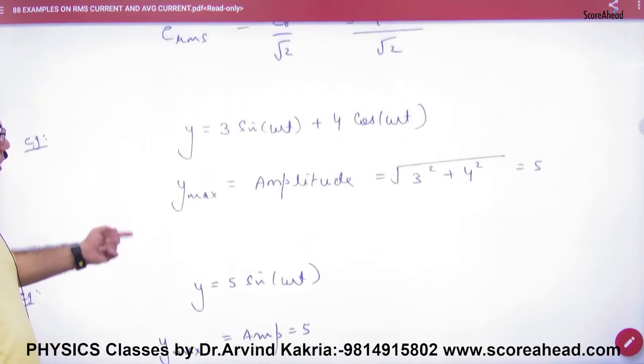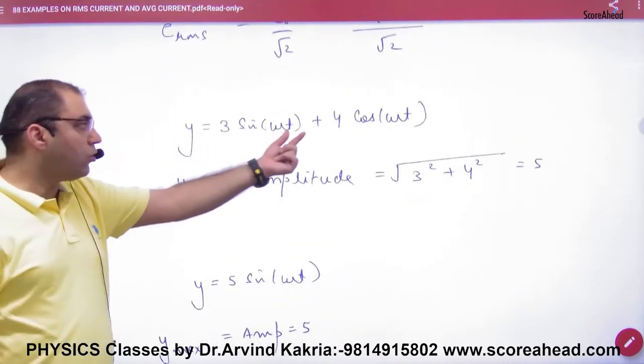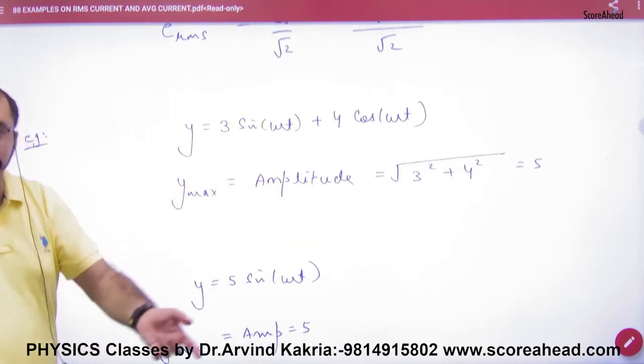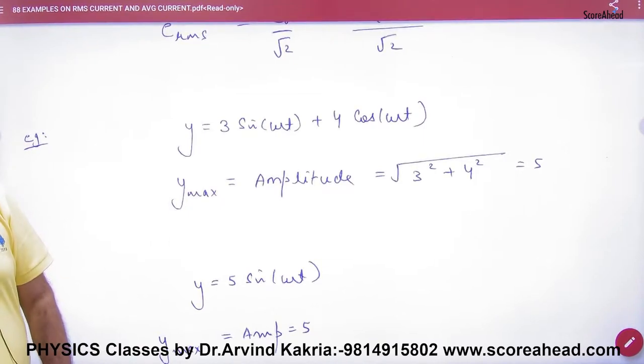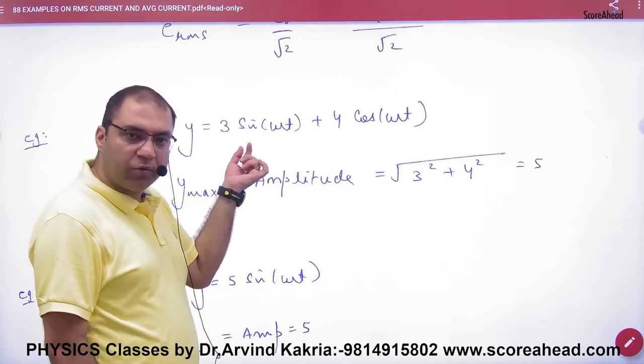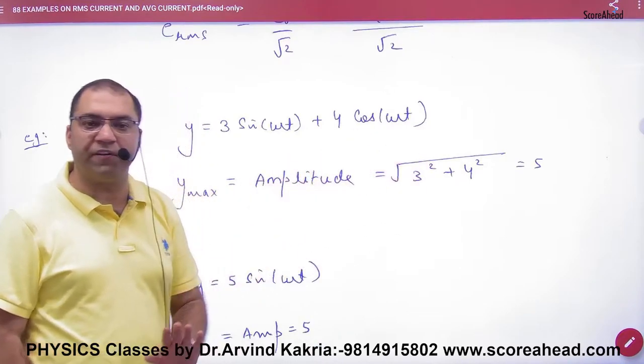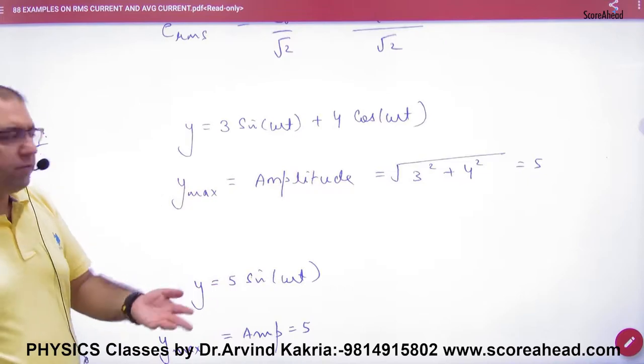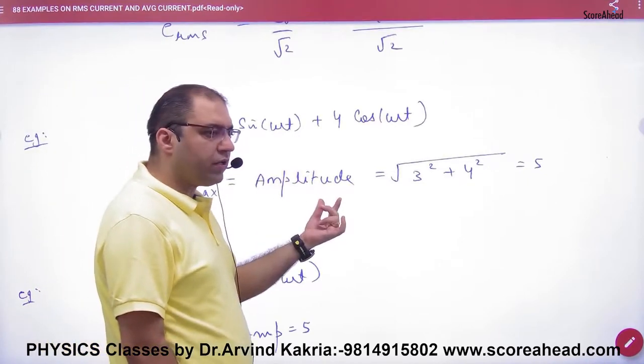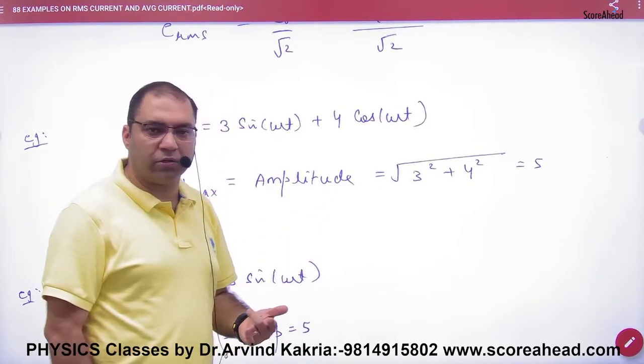If in SHM's equation both sin and cos are coming, the rule is: the sin coefficient squared and the cos coefficient squared under root gives the maximum EMF or maximum displacement.